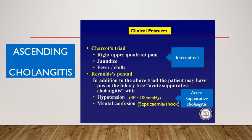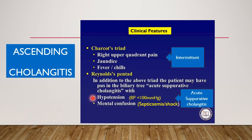Some details about these clinical features — Charcot's triad and Reynolds pentad. Charcot's triad is right upper quadrant pain, jaundice, and fever with chills. Typically these symptoms are all three intermittent — they come and go. The second eponym is Reynolds pentad. In addition to the above triad, the patient may also have pus in the biliary system — this is known as acute suppurative cholangitis. This produces two other features: hypotension and mental confusion, which may be early signs that the patient is going into septicemic shock.